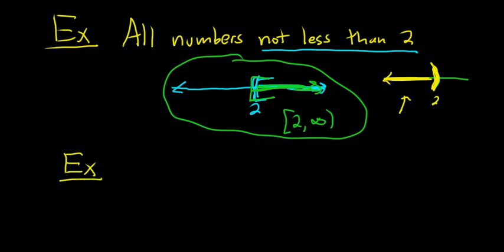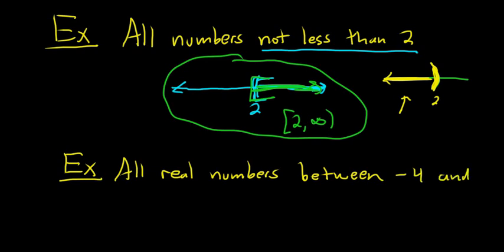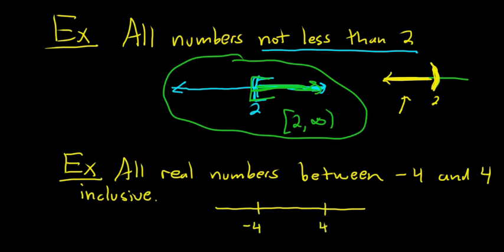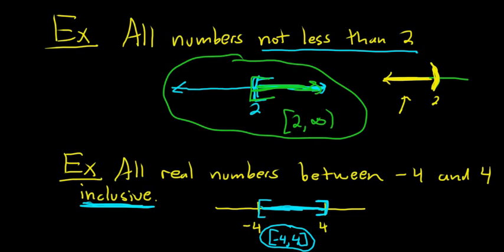One more: all real numbers between negative 4 and 4 inclusive. Inclusive is a new word — it means you include negative 4 and 4. Draw the picture with negative 4 and 4, shade between them. Since they're included, we use brackets on both ends. The answer from the picture is bracket negative 4, comma, 4, bracket. I hope this video has been helpful to someone learning about this stuff.